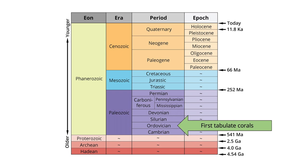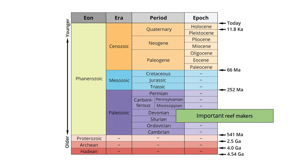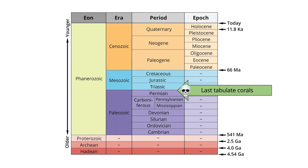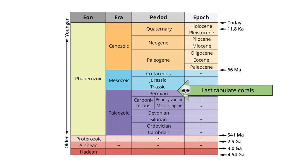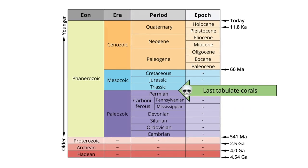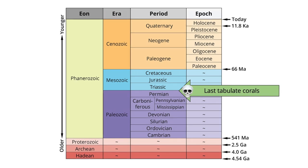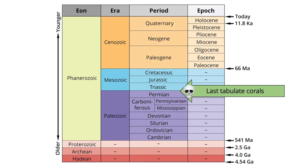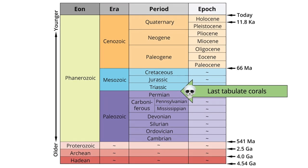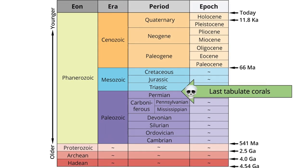Tabulate corals originated during the Ordovician period. They were very important reef makers during the Silurian and Devonian periods and formed complex habitats that allowed other organisms to flourish. Tabulate corals met their demise at the end of the Permian period during the most severe mass extinction in Earth's history, which happened just over 250 million years ago.